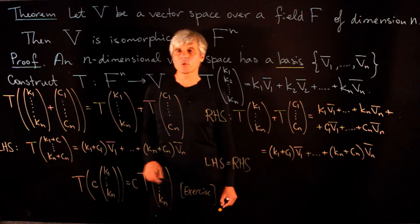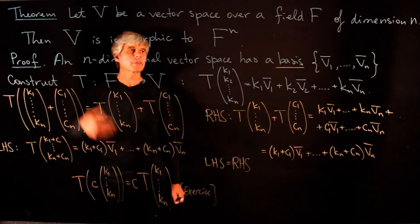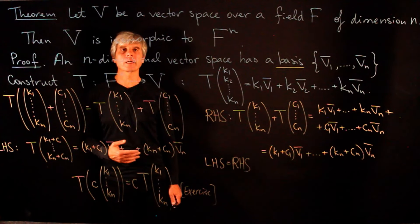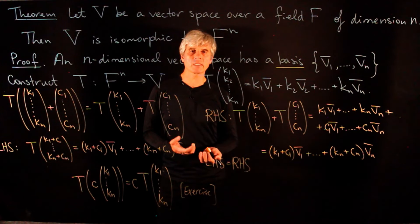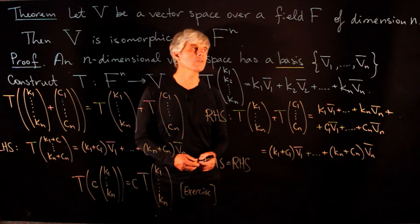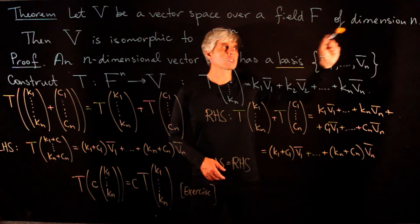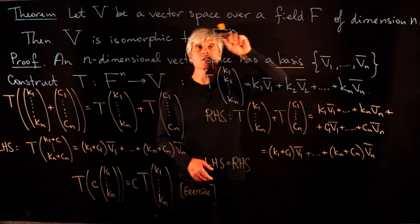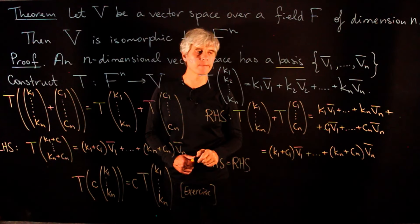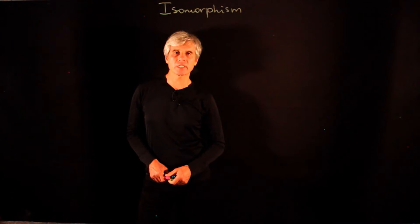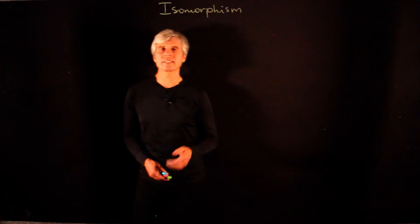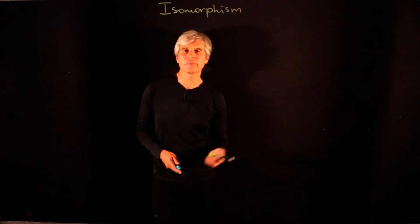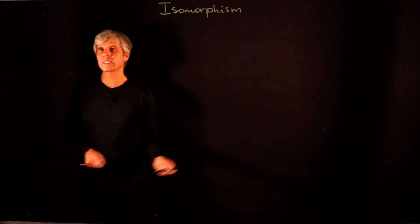This completes the proof of the theorem. The key takeaway is that for finite-dimensional vector spaces, two vector spaces are isomorphic if and only if they have the same dimension, since both will be isomorphic to F^N. The remaining part of this lecture will discuss the concept of isomorphism in a wider sense through a game.